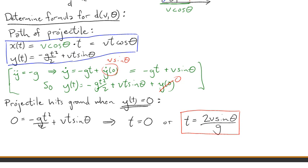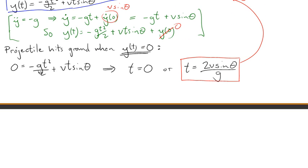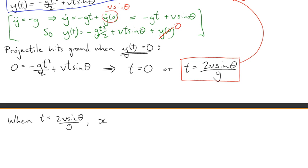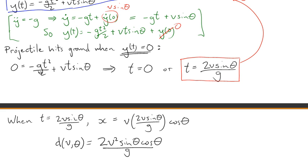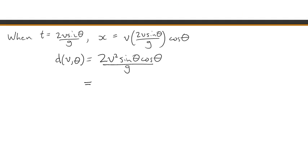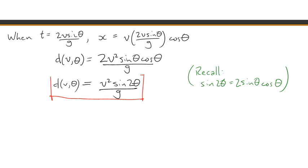So to determine how far the projectile travels, we take this value for t and plug it in to the x component. So here's what we get when we do that. When t equals two v sine theta over g, x is v, two v sine theta over g, times cos theta. And that's the distance as a function of v and theta. It's two v squared sine theta cos theta over g. And if you recall this identity that sine of two theta is two sine theta cos theta, this simplifies now. d of v and theta is v squared sine two theta over g.